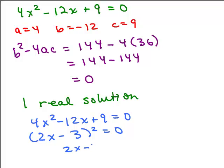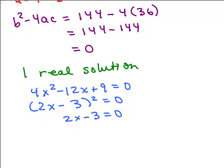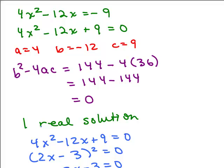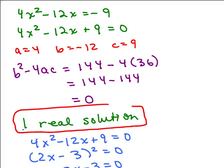The discriminant equals 0. That means in the quadratic formula we'd have plus the square root of 0 and minus the square root of 0, so we get one real solution. Looking at the original problem, 4x squared minus 12x plus 9 is a perfect square — it factors as 2x minus 3 times 2x minus 3. Solving gives just x equals 3/2, one real solution. The discriminant saves you from going through all that; it just tells you the type of solution. Root is another word for solution in math, and this one has one real solution.